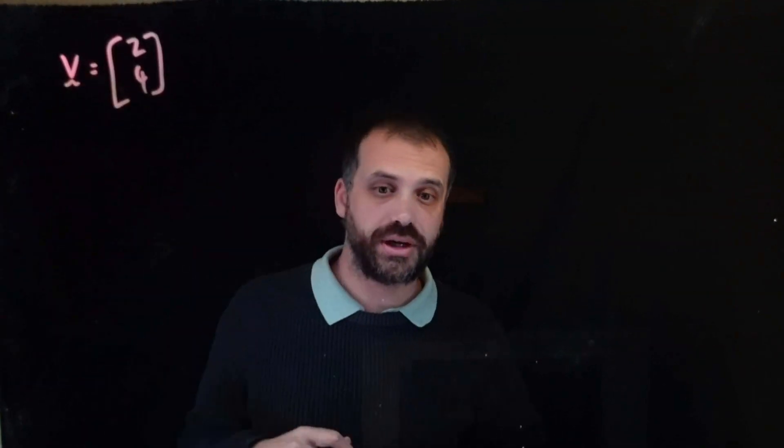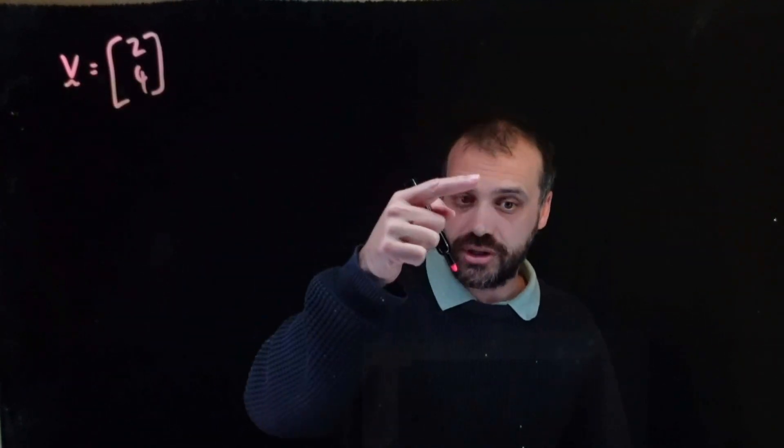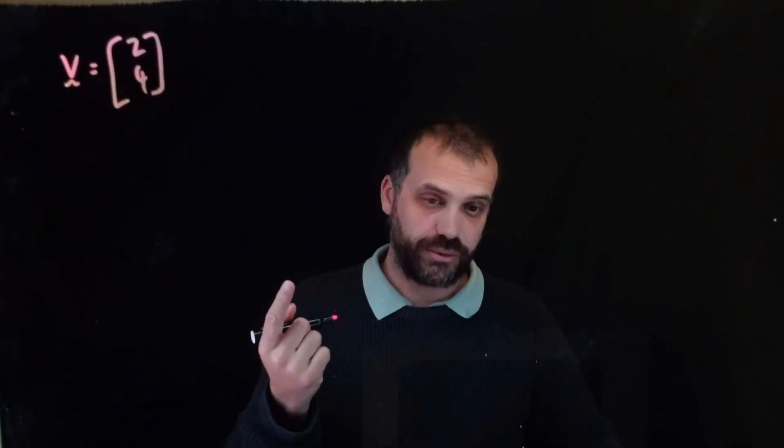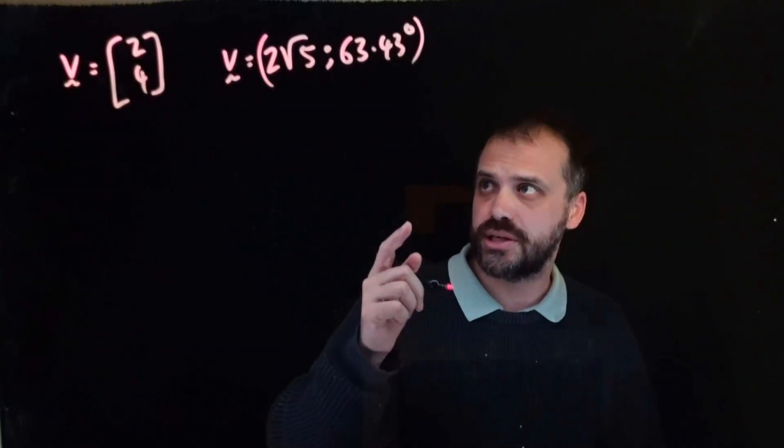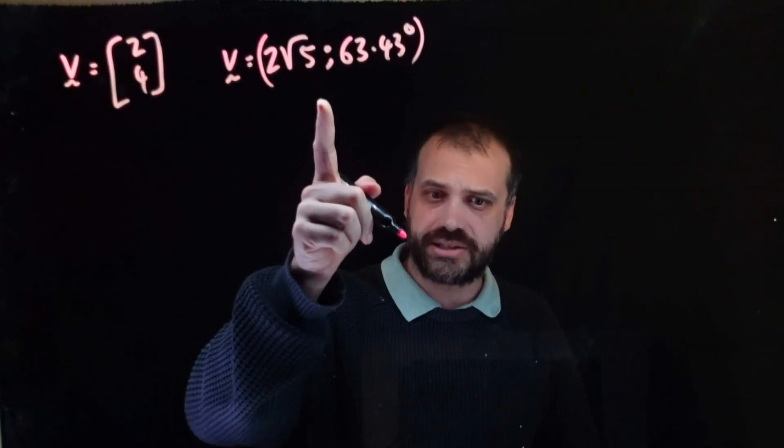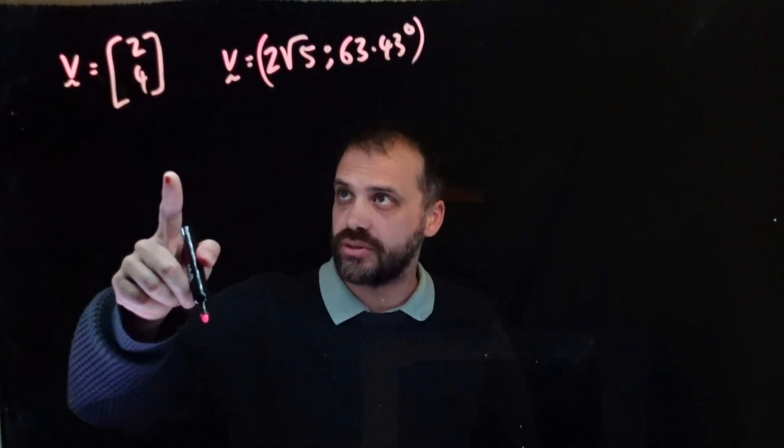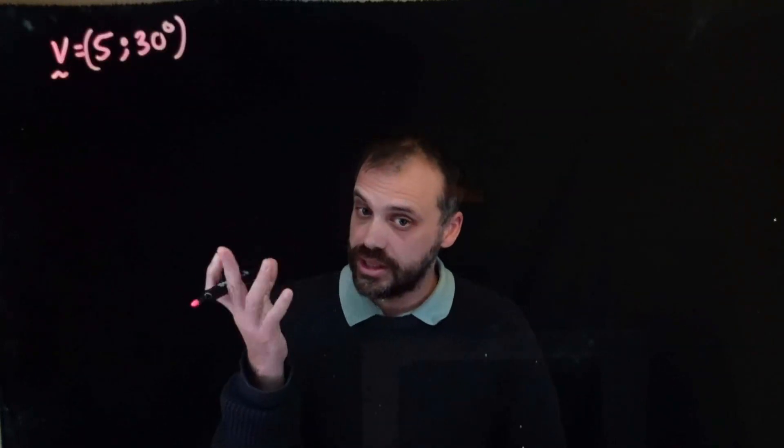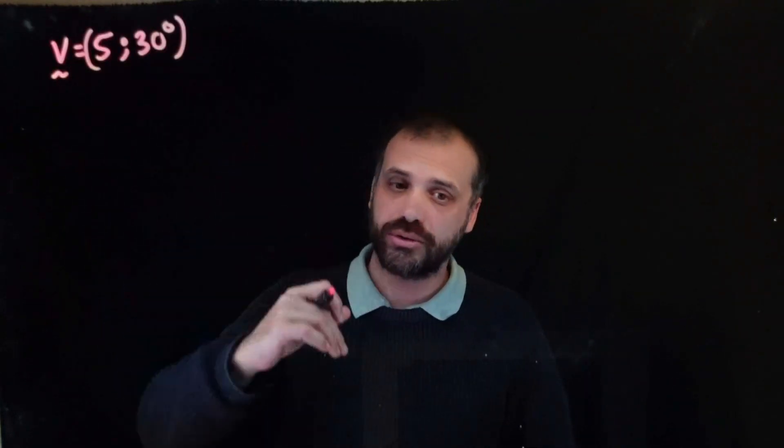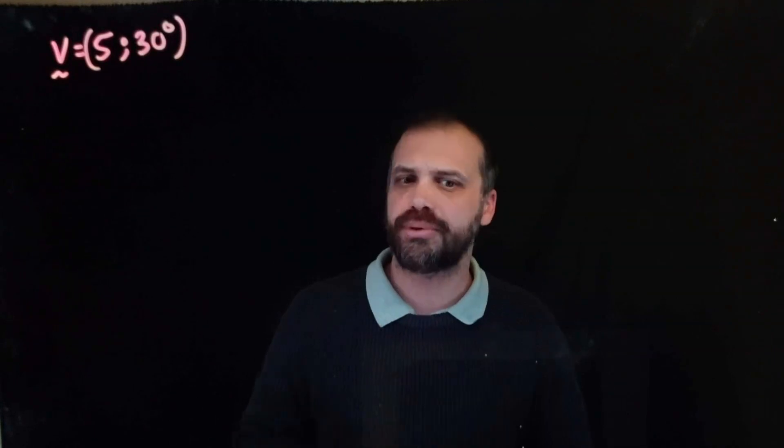So previously we looked at a vector in component form, something like that, and we converted it to polar form, something like that. So the question is, if you were given that and asked what that was, how would you do it? Well let's take a look. Here is a vector in polar form. Let's write it in component form.